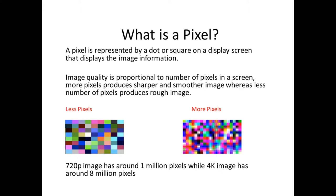The image quality is actually directly proportional to the number of pixels in a screen. This means more pixels produces sharper and smoother images; less number of pixels produces rough images.